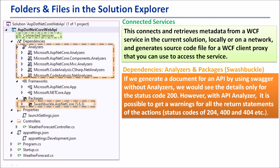Now let's look at the dependencies and packages together. If we generate a document for an API using Swagger Analyzer, we would see details only for the status code 200. However, with API Analyzer, it is possible to get a warning for all return statements of the actions — for example, status codes 200, 400, and 404. So we are going to use Analyzer with Swagger to generate useful documents and messages for every status code.